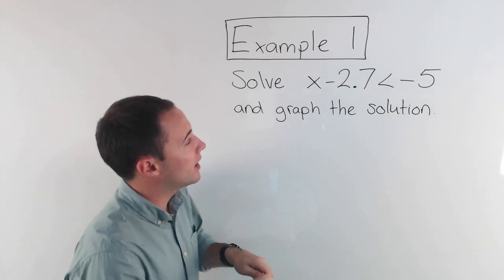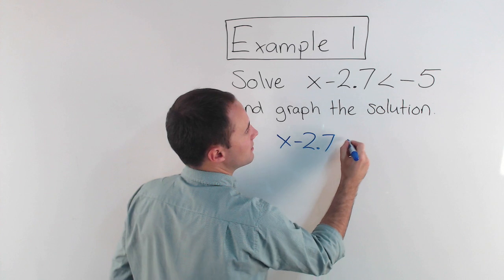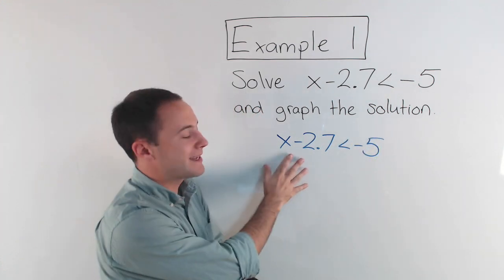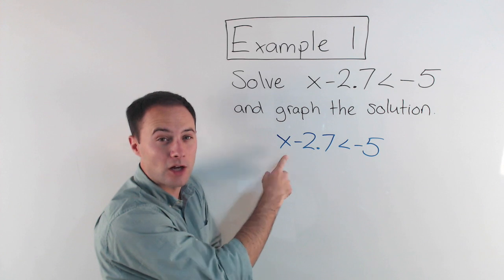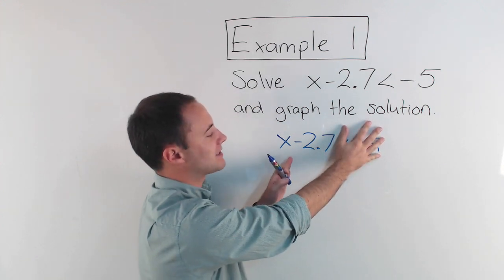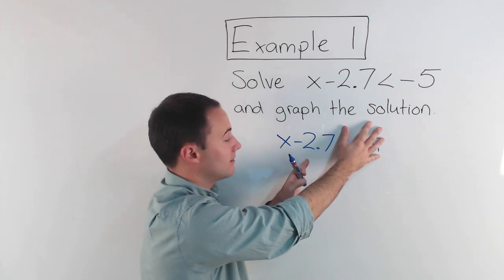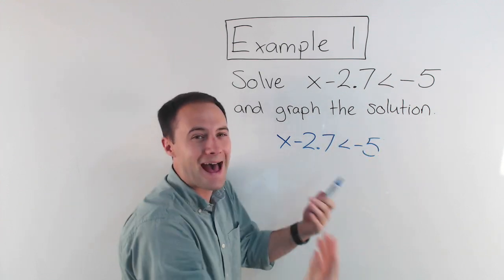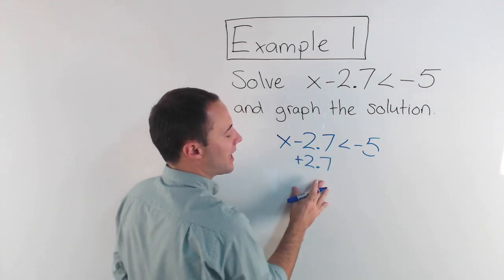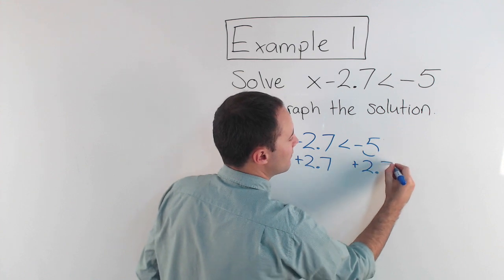So if you see we've got x minus 2.7 is less than negative 5. Again, my goal, I'm trying to get this variable x alone. So I'm going to concentrate over here. I've got x minus 2.7. So to get rid of the 2.7, this minus 2.7, I'm going to add 2.7. I do the opposite. If I add 2.7 to this side, I do the same here, plus 2.7.